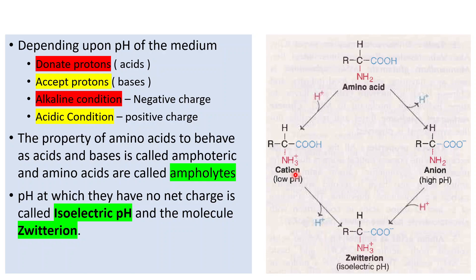This property of amino acids to behave both as an acid as well as a base is called amphoteric, and the amino acids are called ampholytes. If we adjust the pH such that the number of positive charges and the number of negative charges is equal, that pH is called the isoelectric pH. The net charge is zero and the molecule is called a zwitter ion.